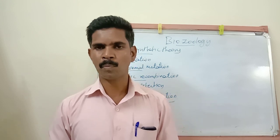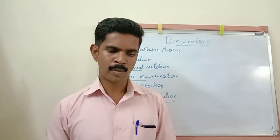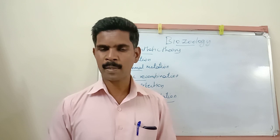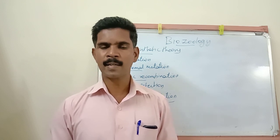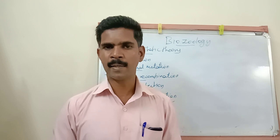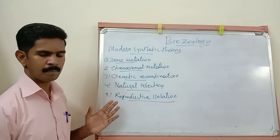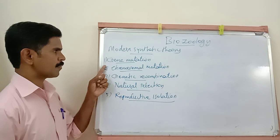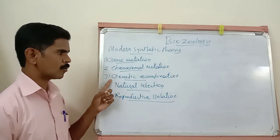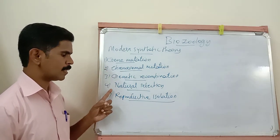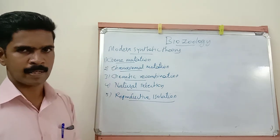Now we have completed the Modern Synthetic Theory, proposed by a group of scientists. This theory consists of five important basic factors: gene mutation, chromosomal mutation, genetic recombination, natural selection, and reproductive isolation.